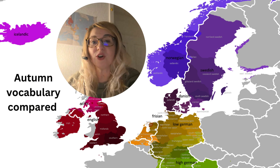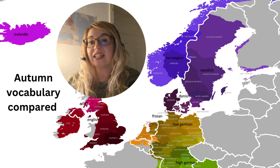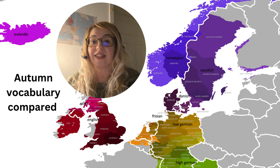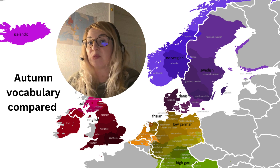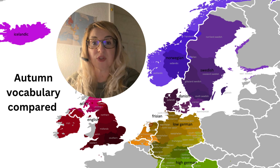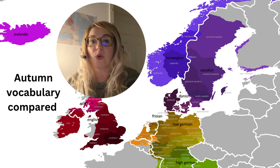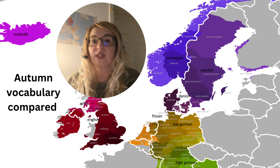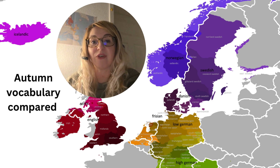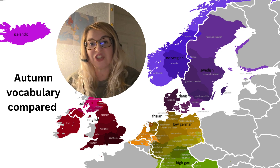Welcome to a new installment in the series Germanic Languages Compared. This is a list about autumn — vocabulary items related to autumn, as well as some fascinating etymologies related to them. I strongly encourage you to contribute in the comment section with corrections or additions to the list, and generally things I might have missed. Let's start and enjoy.